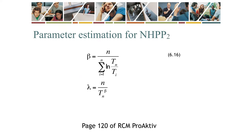In the case of NHPP2, the parameters follow from simple calculation. Beta is first calculated from the number of failures and the arrival times. Thereafter, lambda is calculated from the number of failures, the last arrival time, and the value of beta.